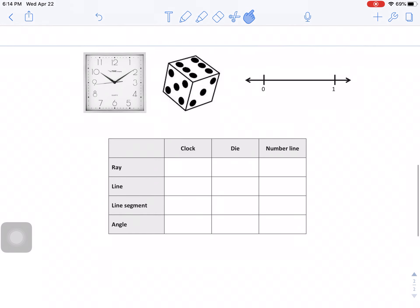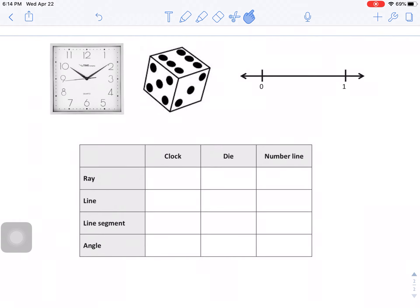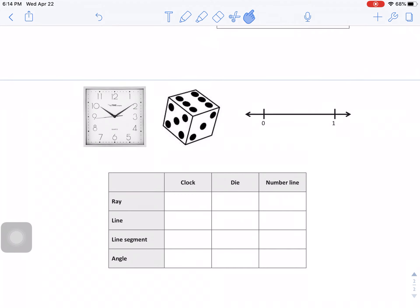Another activity you're going to have is to find the different vocabulary words that we need to know about, the different parts of a figure in real life objects. And you're just going to mark them if you find them. So you will just look. Is there a ray somewhere in here? In the clock. If there's a line in the clock. If there are line segments in the clock. If there are angles in the clock. Then you're going to mark on the die and then on the number line. If you have any questions, please contact your teacher.